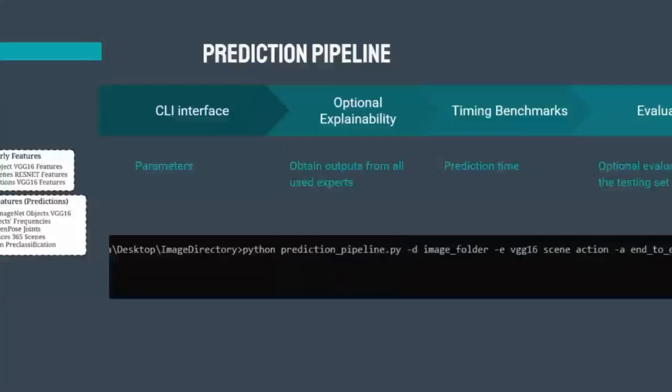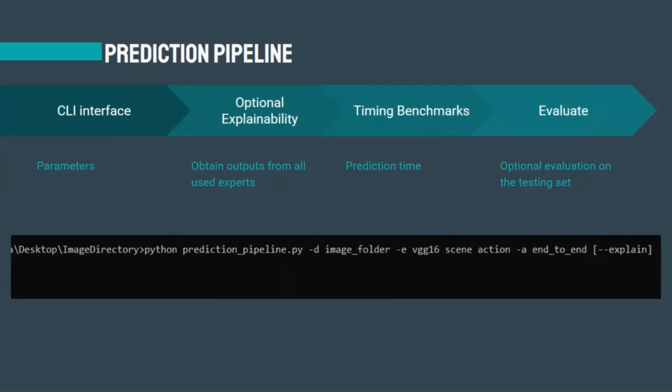To interface with our model, we implemented a production pipeline with the following features. A command line interface takes the directory containing images to predict activities in and outputs the corresponding class for every image. It also has optional explainability — you can pass the explain argument to let the pipeline output the explainability from all experts, which lets users know exactly why the model classifies an image to a certain class and where it fails. The pipeline also provides timing benchmarks and evaluation metrics including top-one and top-five accuracy.